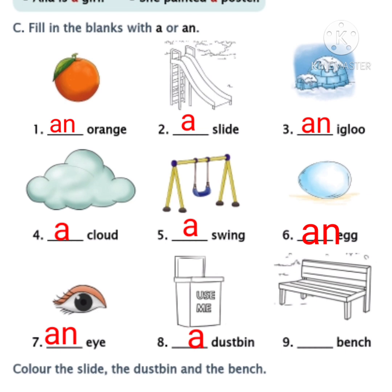Have you done, children? Now the last one: bench. The word bench starts with B. Tell me, children, is B a vowel or consonant? Yes, it's a consonant, so we must write A in the ninth blank. Did you finish, children? So we have completed section C. Children, once check your answers, whether you wrote correctly or not.